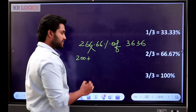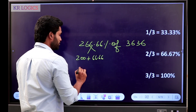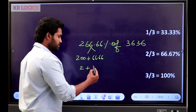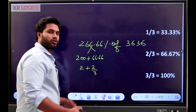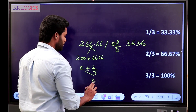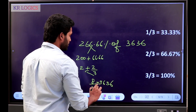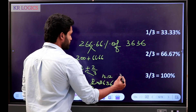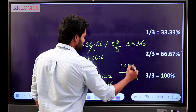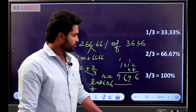200 plus 66.6 in split. 200 percentage is 2. 66.6 is 2 by 3. If we solve it, it is 8 by 3. So this fraction value is 8 by 3 of 3636. 1212 into 8 is the answer — answer is 9696. Clear, right?